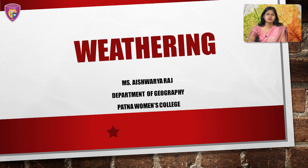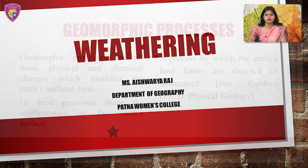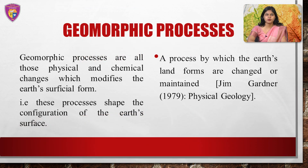You must be wondering sometimes why the surface of the earth is uneven. It is mainly because earth's crust is dynamic and geomorphic processes are acting to bring physical and chemical changes which modify the earth's surficial form — that is, these processes shape the configuration of the earth's surface. As per Jim Gardner, it is a process by which earth's landforms are changed or maintained.